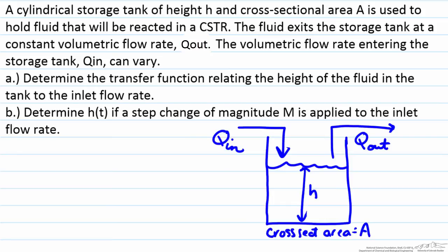Here we have a cylindrical tank with liquid height h and cross-sectional area A, and volumetric flow rates of Q_in for the inlet flow rate and Q_out for the outlet flow rate. The inlet flow rate is allowed to vary, whereas the outlet flow rate is assumed to be constant.